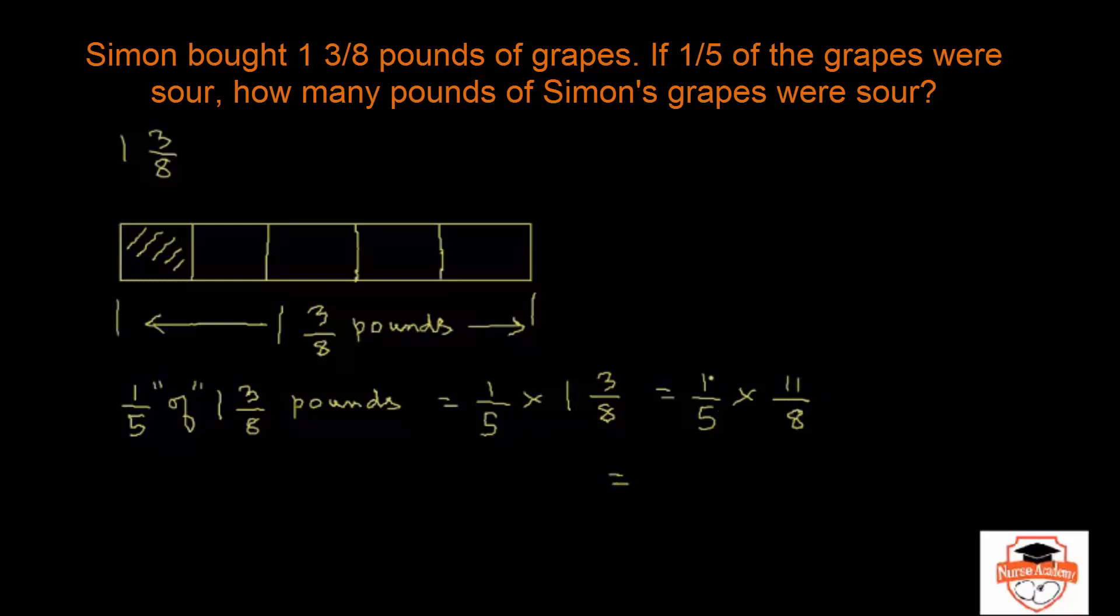So you have, there's no question of cross reducing. 11 is a prime number, its factors are 1 and 11, and if you divide 11 with 11, you don't have a denominator to be divided with 11. So let's forget cross reducing. This is 1 times 11 over 5 times 8 which gives us 11/40 pounds.